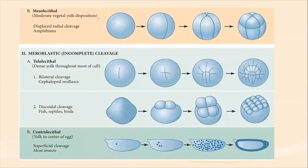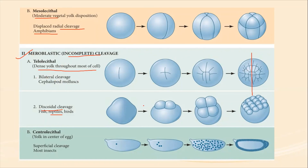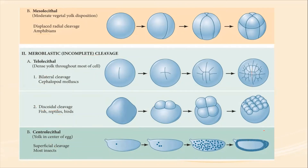Looking at the diagram: mesolecithal eggs have a moderate amount of yolk and are generally found in amphibians, where the cleavage pattern is radial. For meroblastic or incomplete cleavage, which has a high amount of yolk, there are further types. Telolecithal eggs, which have dense yolk throughout the cell, show discoidal cleavage — found in fishes, reptiles, and birds — and bilateral cleavage, found in cephalopod molluscs. Centrolecithal eggs, which have yolk only at the center, undergo cleavage only at the periphery. In discoidal cleavage, the division is only present at the tip in the form of a disc.